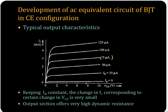The change in IC corresponding to a change in VCE is very small. This means that the output section of the BJT offers very high dynamic resistance.